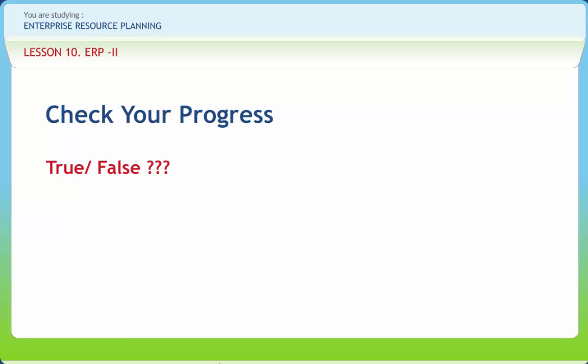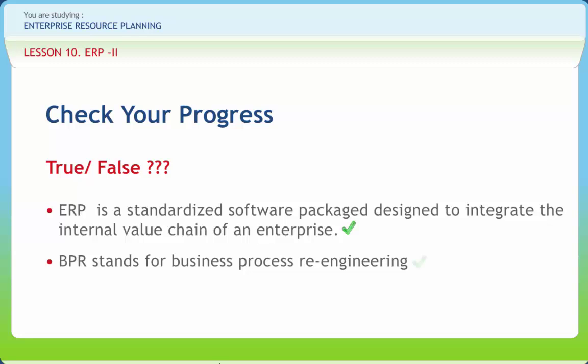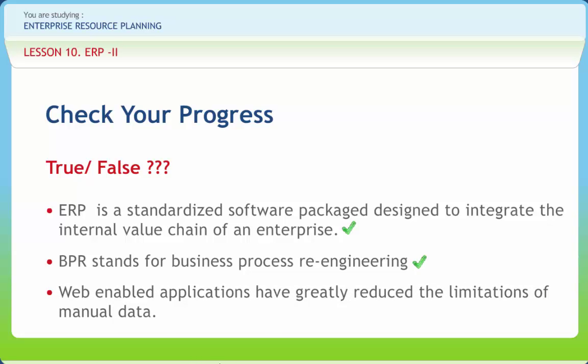Now let us check if we have understood the various concepts discussed in this lesson. ERP is a standardized software package designed to integrate the internal value chain of an enterprise — right or wrong? Right. BPR stands for Business Process Reengineering — right or wrong? Right. Web-enabled applications have greatly reduced the limitations of manual data — right or wrong? Right.